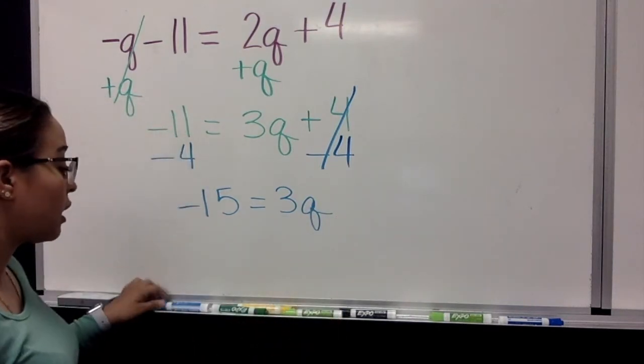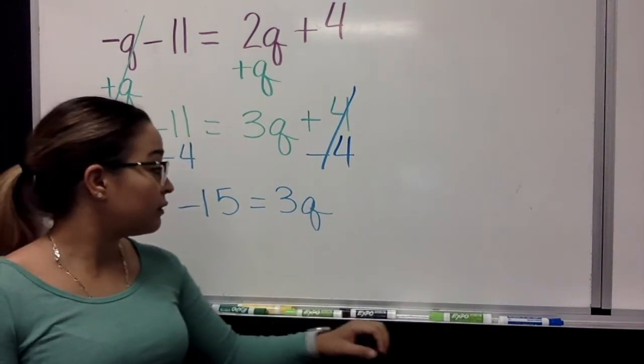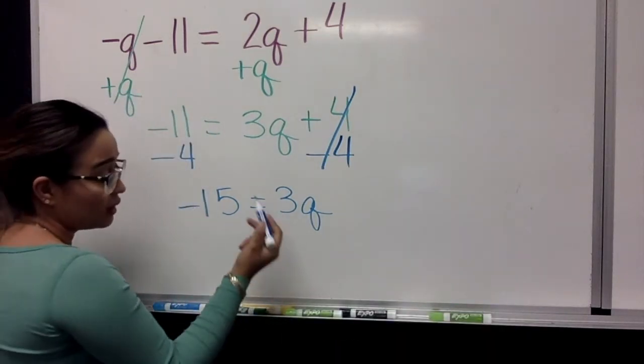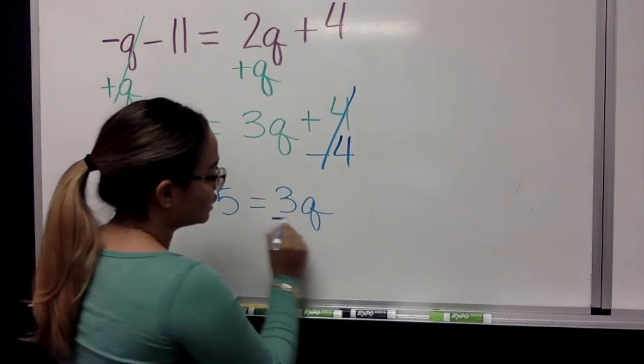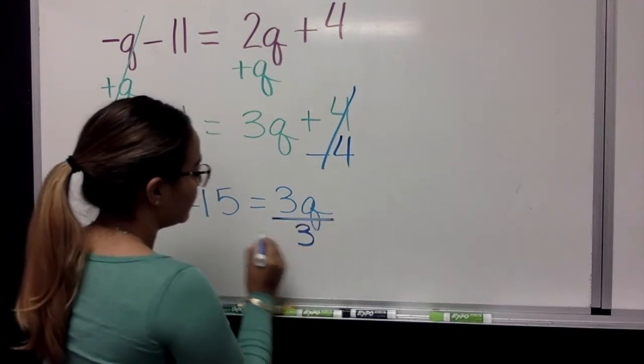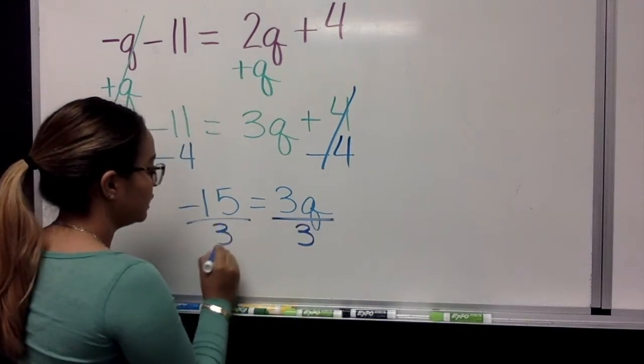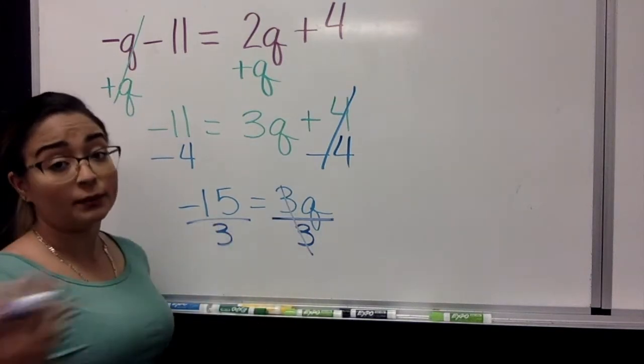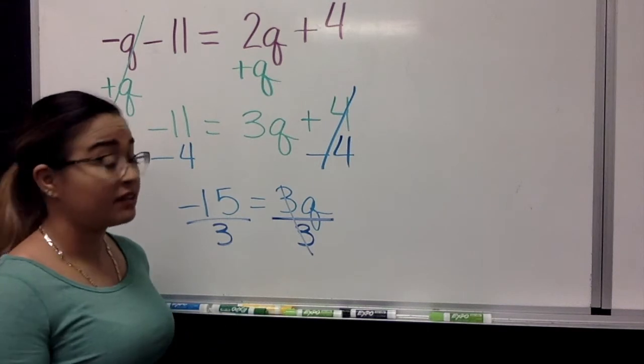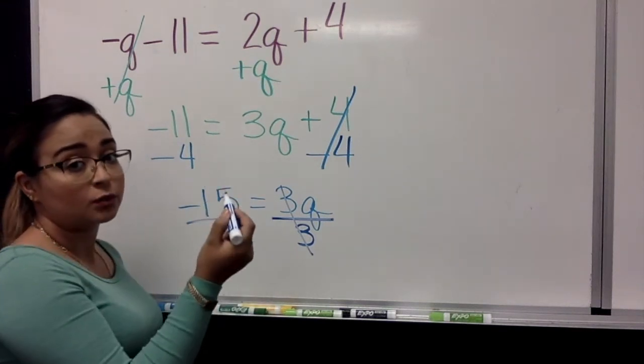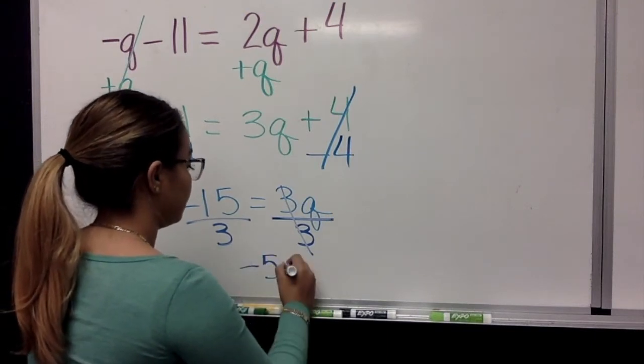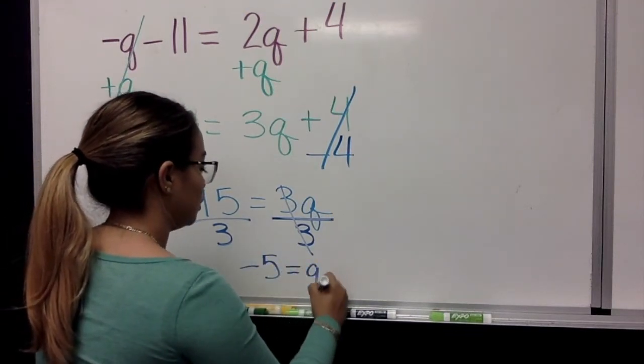We are on our very last step of one-step equation. So we are going to get rid of the 3. So we are going to be dividing by 3. 3 cancels out here. 3 goes into 15 how many times? 5. And it's a negative. So our answer will be negative. So negative 5 equals Q.